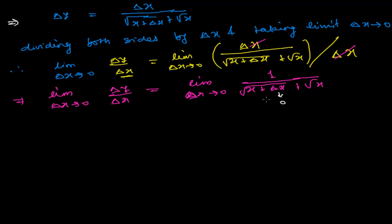This will turn out to 0 and I get dy/dx. It will be 1 over [root of x plus 0 plus root x].